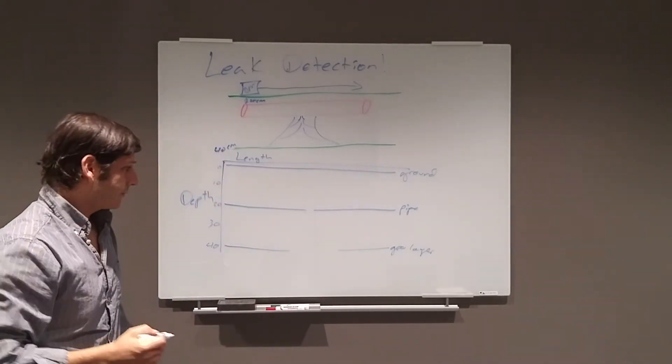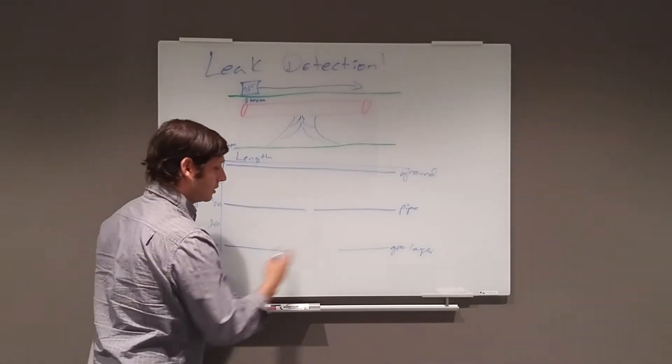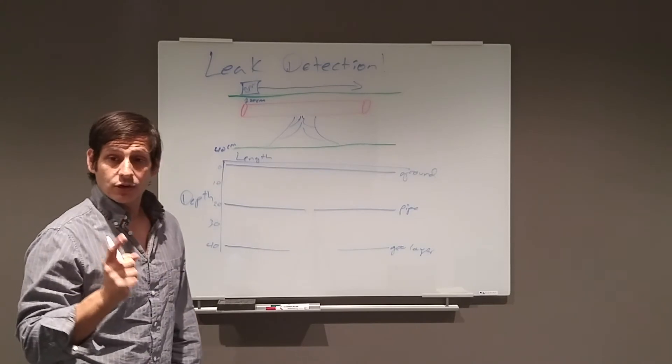So this, for example, is what you're going to see in profile view. Distortion of the pipe right where the leak is and the distortion of the geological layer. Now, here's the critical thing.